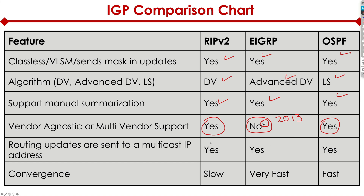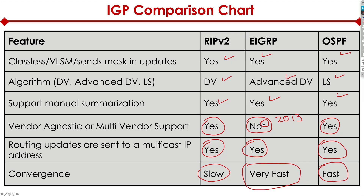Routing updates are sent to a multicast IP address on all three protocols. From a convergence perspective, RIP version 2 is slow. EIGRP is very fast because it has the concept of successor and feasible successor — it keeps the primary and secondary path in the routing table at the same time and doesn't have to recalculate, making switchover very fast. OSPF is considered fast.